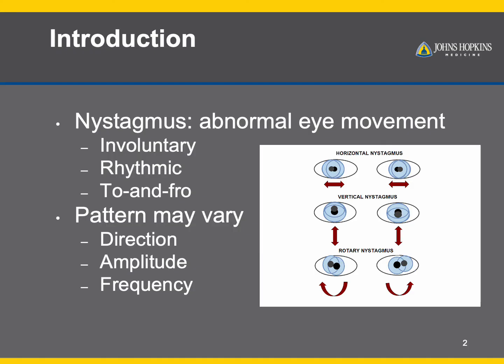Nystagmus is a kind of abnormal eye movement that is involuntary, rhythmic, and in a to-and-fro fashion, sometimes appearing as a shake of the eyes. The movement can be either horizontal, vertical, torsional, or a combination of these directions, with variable amplitude and frequency, and can be worsened or improved by gaze position, fixation, or covering one eye.